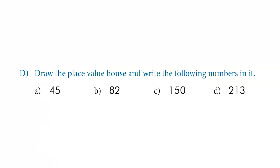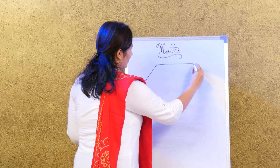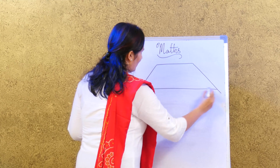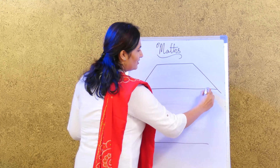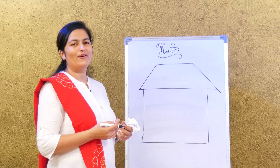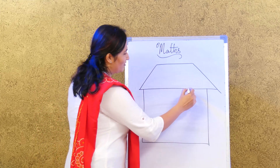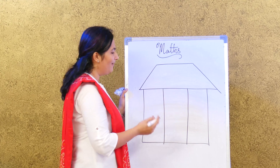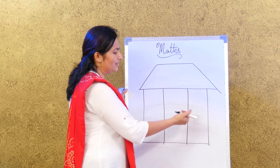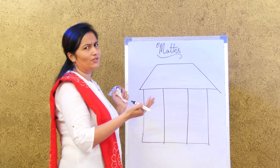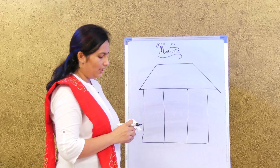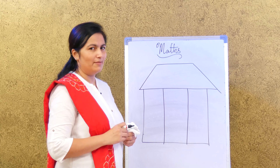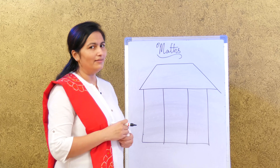The last one is the place value house. Did you enjoy learning about it in Class 2? Let's try drawing it — it's easy. Our house has room number 1, room number 2, and room number 3, or we can call them the room on the right, the room in the middle, and the room on the left. We are just reviewing what you remember.